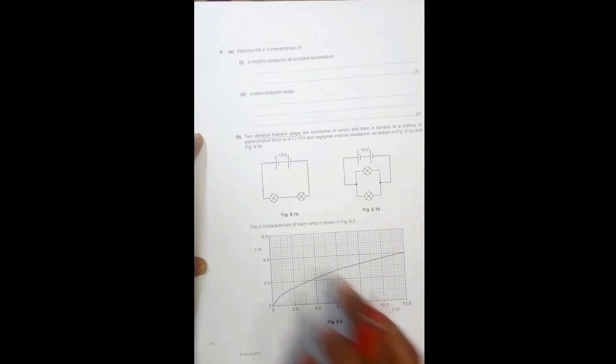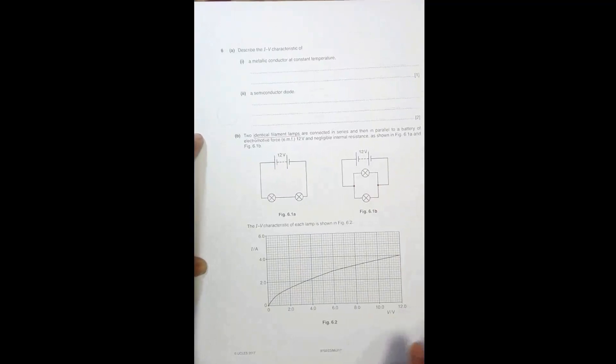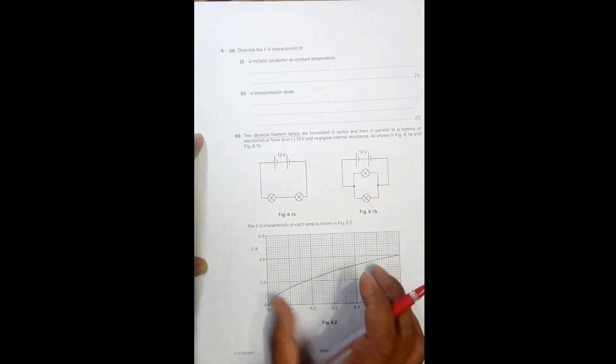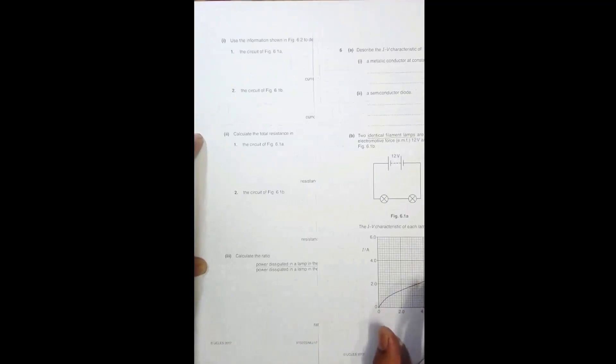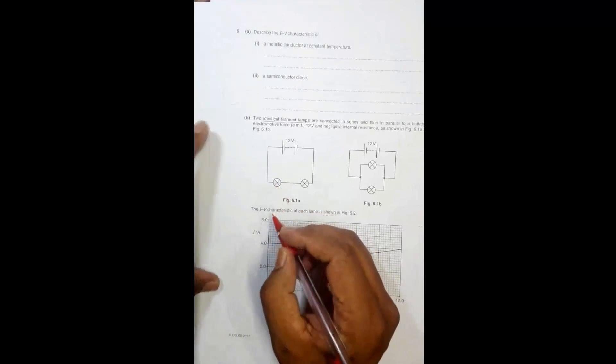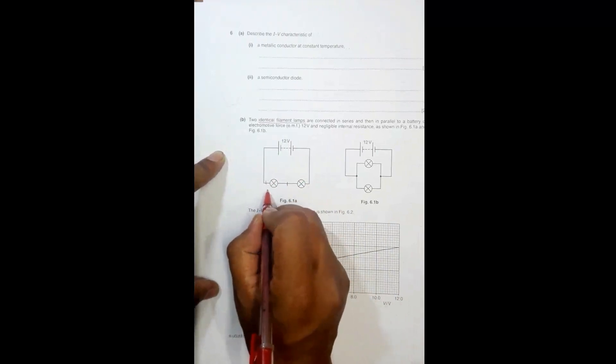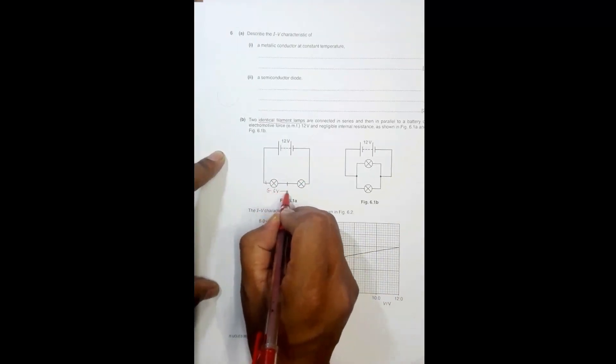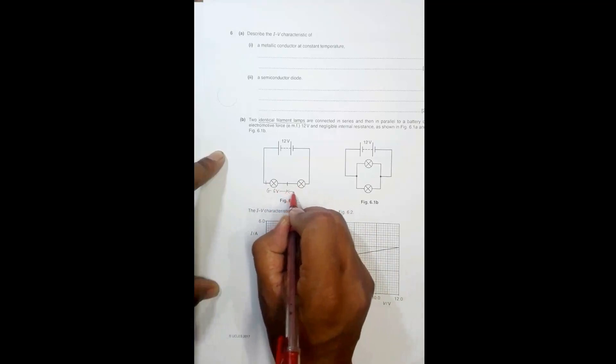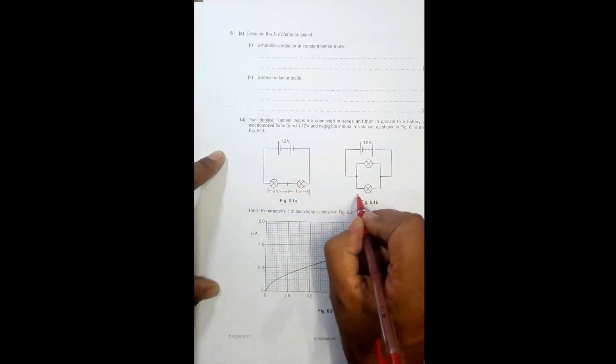In case of figure 6.1A, since the bulbs are identical, according to the voltage divider formula there will be 6 volt across this bulb and 6 volt across this bulb. And here it will be 12 volt since they are in parallel.